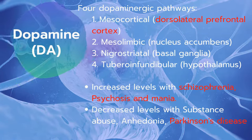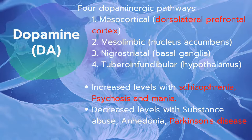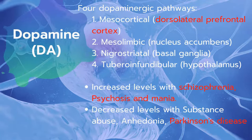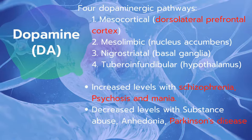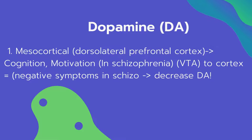Increased levels of dopamine can be seen in patients with schizophrenia, psychosis, and mania. Decreased levels of dopamine are associated with substance abuse, anhedonia, and Parkinson's disease.